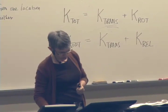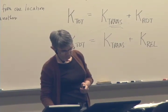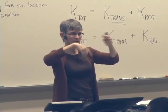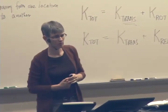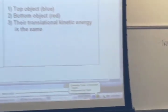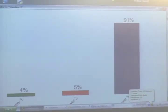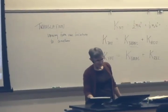Let's consider the following question. We decided that the bottom object — the one that was rotating — had greater total kinetic energy. Which object, the top one or the bottom one, had the greater translational kinetic energy? The translational kinetic energy was the same, because the total mass was the same and the speed of the center of mass was the same. What's different is this extra rotational piece that we have to add in.